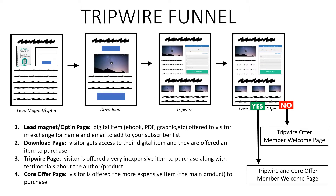A tripwire funnel has many different pieces to it, so let's talk about each piece individually and what the point of each piece is. The first piece is the lead magnet or the opt-in page. This is where you have a digital item like an e-book, a PDF, or some type of graphic that you can offer the visitor in exchange for their name and address so they can be added to your subscriber list.